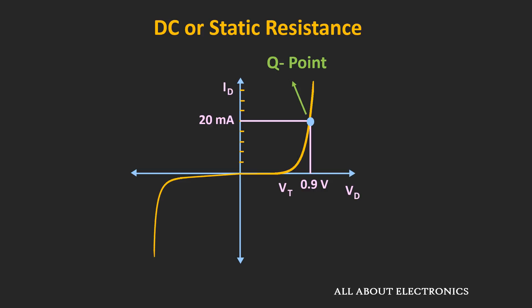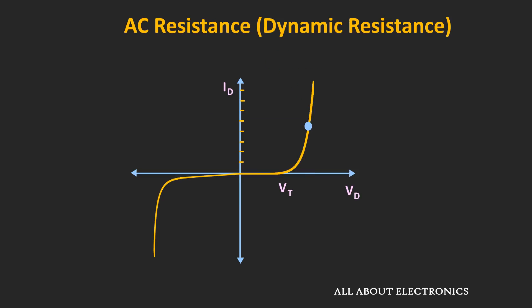Now let's find out how to find the resistance of the diode when the applied voltage is an AC voltage. In this condition, the resistance is known as the AC resistance or dynamic resistance. We assume that before applying the AC signal, some finite DC voltage has already been applied. This point on the diode curve represents the Q-point corresponding to the applied DC voltage, and on top of this DC voltage some finite AC signal has been applied.